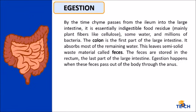Egestion: by the time chyme passes from the ileum into the large intestine, it is essentially indigestible food residue, some water, and millions of bacteria. The colon is the first part of the large intestine; it absorbs most of the remaining water, leaving semi-solid waste material called feces. The feces are stored in the rectum, the last part of the large intestine. Egestion happens when these feces pass out of the body through the anus.